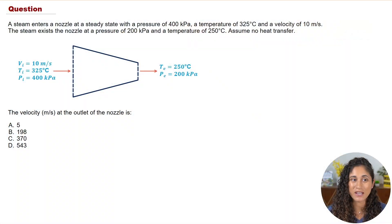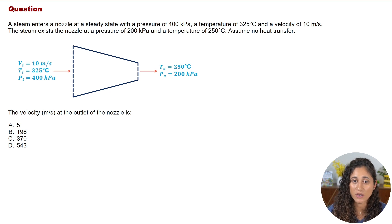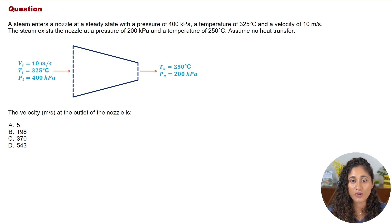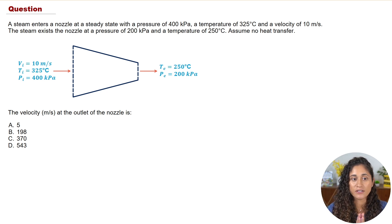Steam enters a nozzle at steady state with a pressure of 400 kPa, a temperature of 325°C, and a velocity of 10 m/s. The steam exits the nozzle at a pressure of 200 kPa and a temperature of 250°C. Assume no heat transfer, and we want to determine the velocity at the outlet of the nozzle.